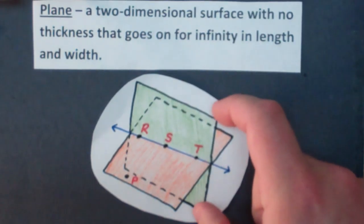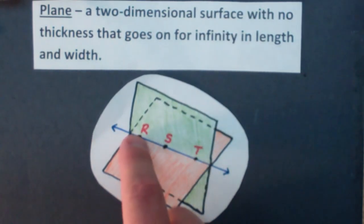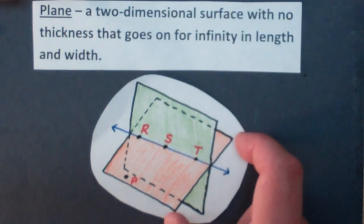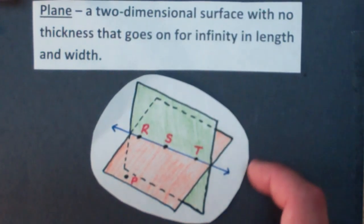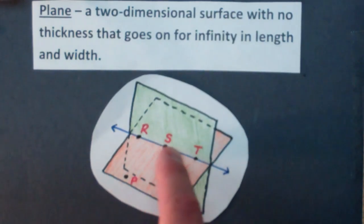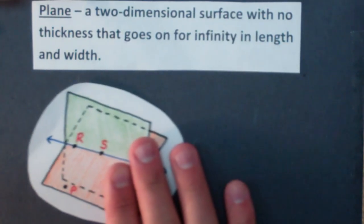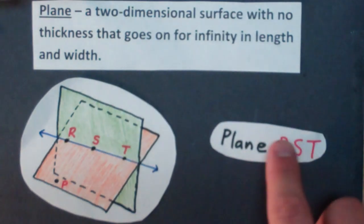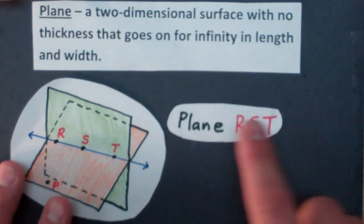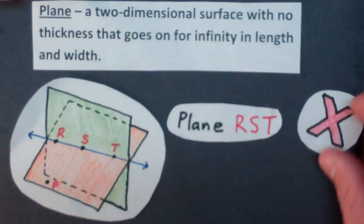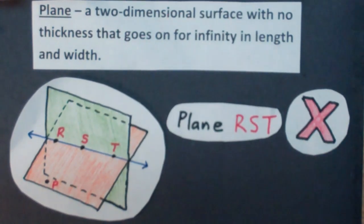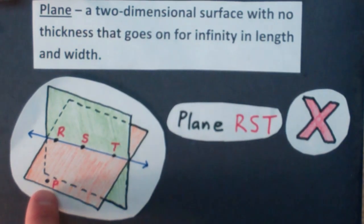Because in theory, we have a green plane here where R, S, and T are touching it, but I have another plane in orange that's intersecting the green plane that also has points R, S, and T on it. So if you're to name a plane, you can't name it using three letters that are in a row. If you use three letters in a row to name a plane, that's wrong.